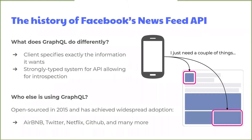GraphQL was initially developed by Facebook to solve a very specific problem — rebuilding their Newsfeed API. Used as an internal tool by Facebook from 2012 until 2015, it ended up spreading and covering most of their mobile app due to its strengths. An open-source version of GraphQL was released in 2015. Soon after it was open-sourced, GraphQL began being used by many other companies like Airbnb, Twitter, Netflix, and GitHub, and has continued to grow in adoption ever since.